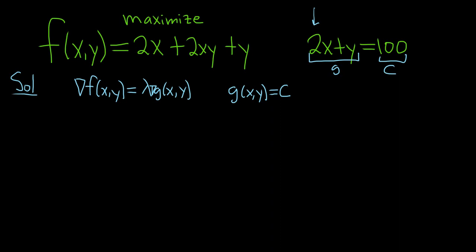Alright, recall the gradient of f is just the vector whose components are the first partial derivatives. The first component is the partial derivative of f with respect to x, the second component is the partial derivative of f with respect to y. And this is equal to lambda times, and this is the partial derivative of g with respect to x. And then here we have little g sub y. Okay, so all we have to do now is compute these partials, so let's do it.